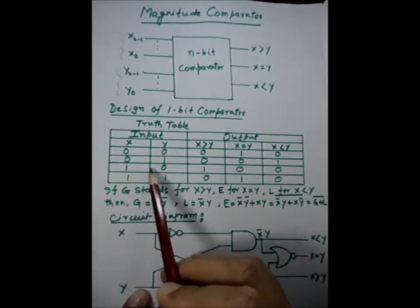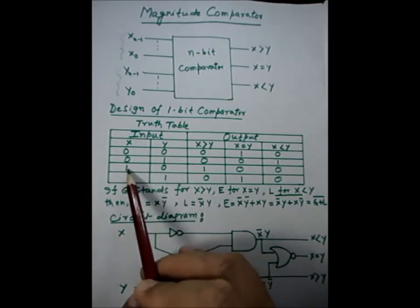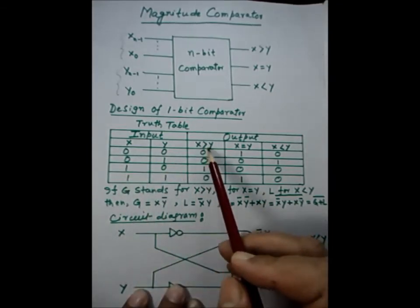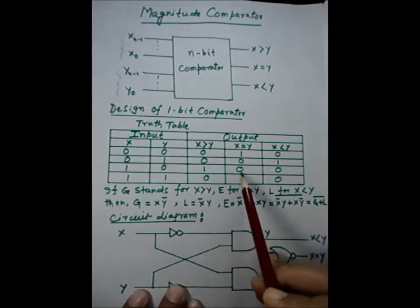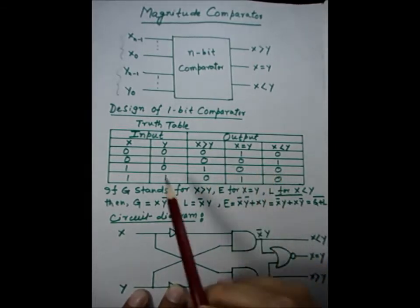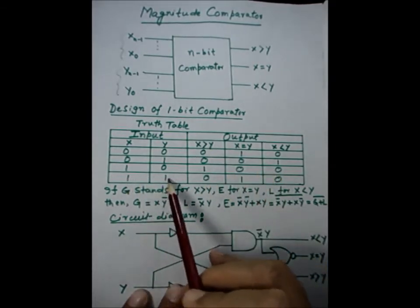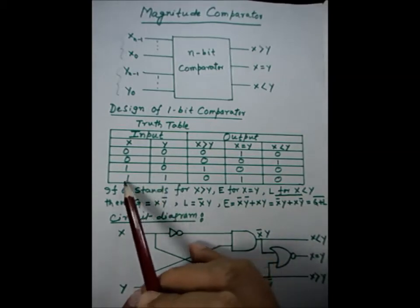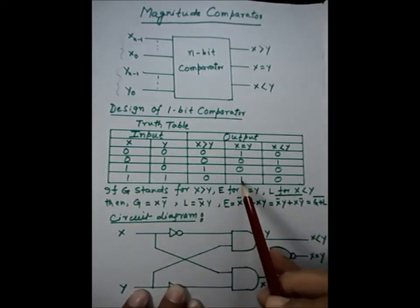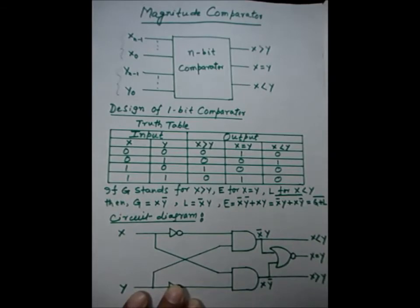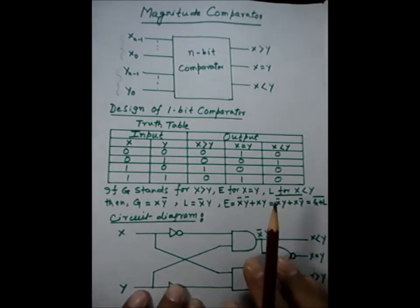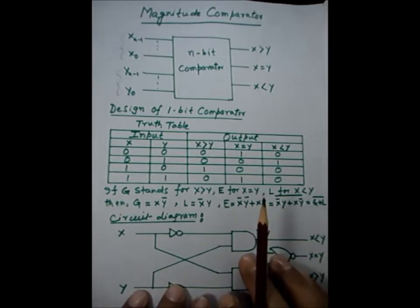In the case of one-zero, X is high, so X is greater than Y — that output becomes one and the remaining two become zero. If both are one-one, that is the equal case, so the equal output becomes high and the remaining two are low. Now we are going to design a circuit for that.